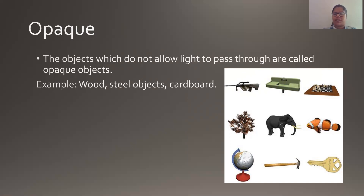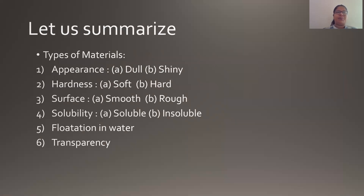Let us summarize what we learned in this chapter. We differentiated materials: first based on appearance into dull and shiny; based on hardness into soft and hard; based on surface into smooth and rough; based on solubility into soluble and insoluble; then based on flotation in water — some objects sink whereas some float on the surface; and lastly based on transparency into three types: transparent, translucent, and opaque. We are completing this chapter here. I hope you all understood and learnt well.